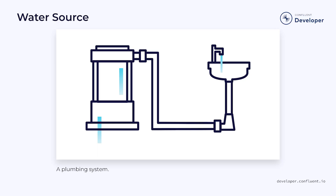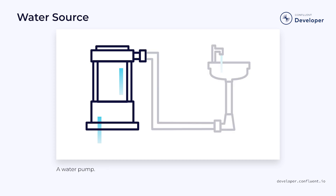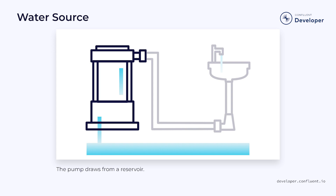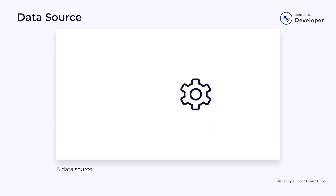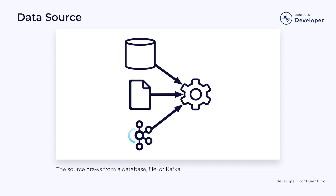We can think of our data source as roughly equivalent to the water source in a plumbing system. The water source often takes the form of a pump, but it needs to draw water from somewhere — usually from a reservoir or perhaps a river. When we build a data source, we have a similar need to draw data from somewhere. This could be something simple, such as a list of integers or strings, but more often it will be from a file, a database, or a streaming system such as Kafka.